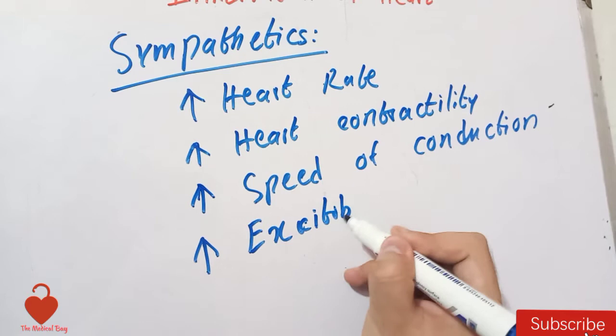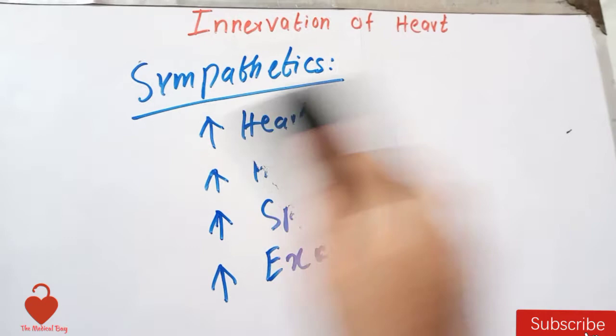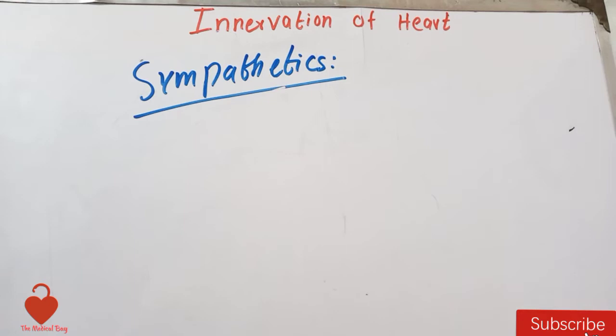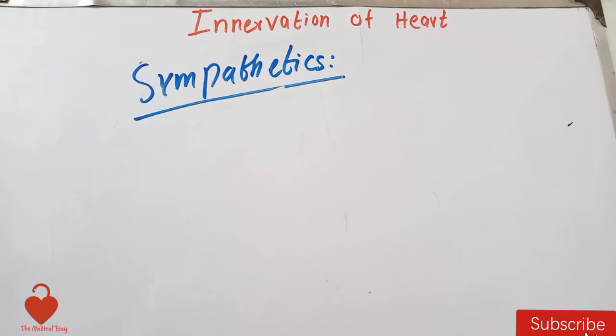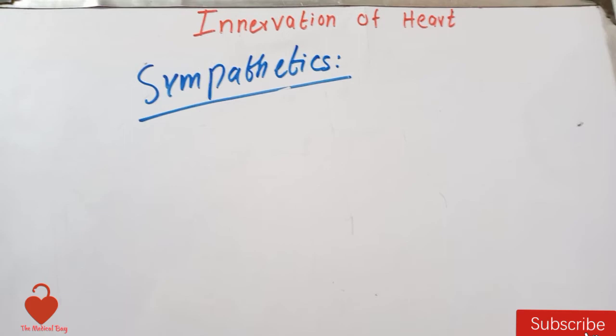In some textbooks these effects are described using the terms positive inotropic, positive chronotropic, positive dromotropic, and positive bathmotropic actions. The sympathetics cause all four: they increase heart rate, increase contractility (the force with which the heart contracts), increase the speed of conduction of the impulse along the heart muscle and conducting system, and increase the excitability of the muscle fiber membrane, thereby reducing the threshold for excitation.